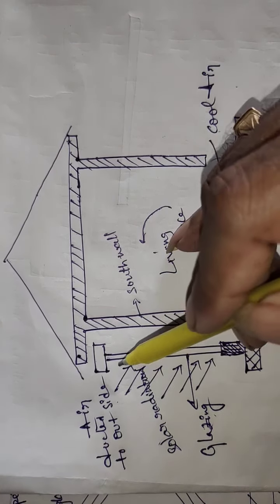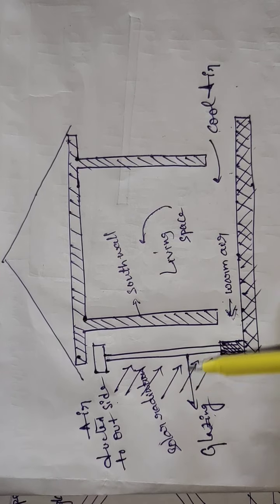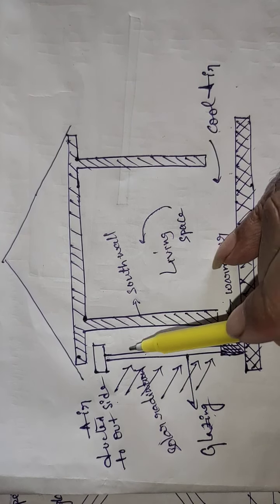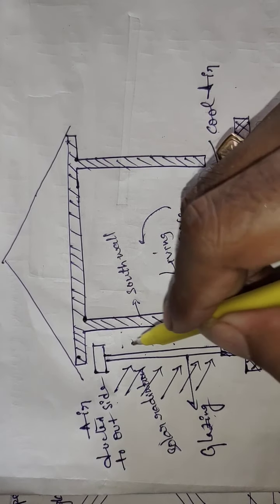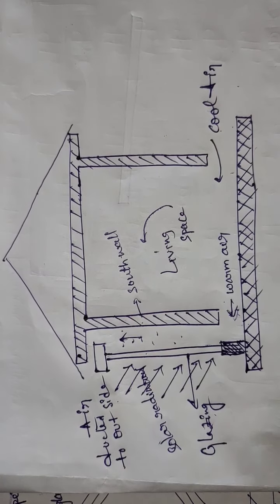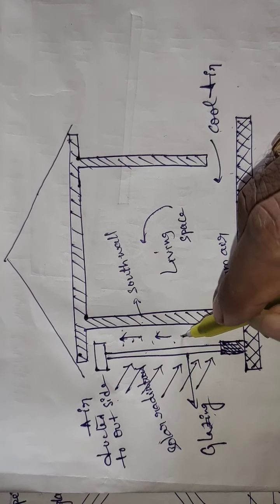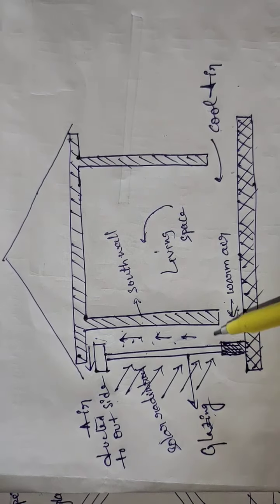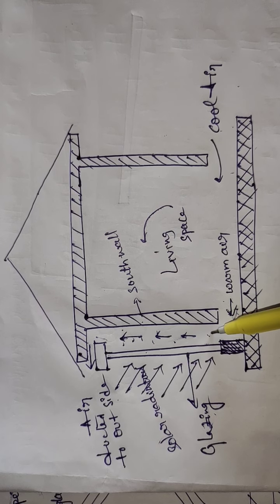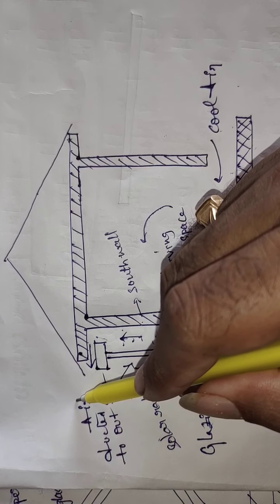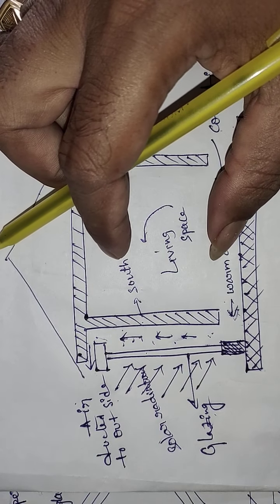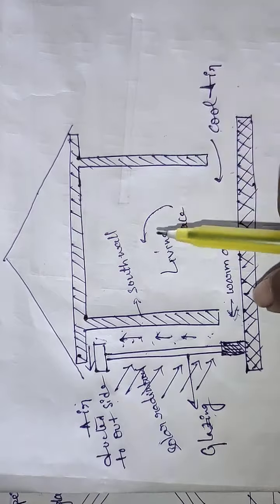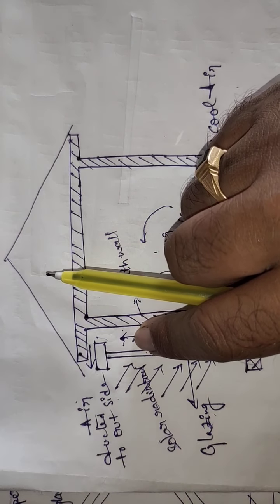Glass plates are heated by solar radiation. What is incident on the glass plates and concrete wall causes a temperature rise in the air. When the density of the air decreases, the air at the top has lower density, and the warm air rises upward through the pipe.